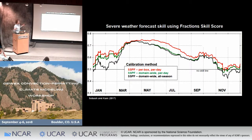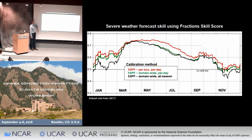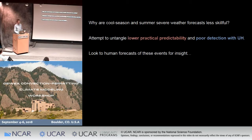Looking at seasonal variations, we use this to give some indication of severe weather forecast skill. Maximum skill tends to occur during spring over the contiguous U.S., with a decrease during the cool season. There are variations based on calibration methods, with the greatest skill coming from calibration done on a per grid box, per day basis, which takes advantage of seasonal and regional variations. Cool season events are really challenging from a forecasting perspective, and summertime severe weather events also tend to be less skillful in terms of anticipating severe convection.